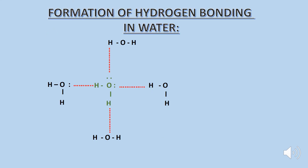Formation of hydrogen bonding in water: in the diagram, the central water molecule is making four hydrogen bonds with four other water molecules. The red dotted line denotes the hydrogen bonding in the water molecule.